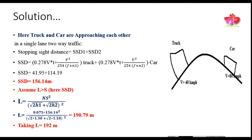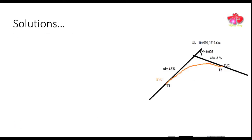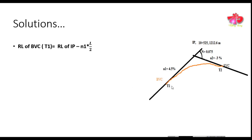We need to find the RL (reduced level/elevation) of T1 (BVC) and T2 (EVC) as shown in the figure. The RL of BVC is given by: RL of BVC = RL of IP − N1 × (L/2). Substituting the known values, the elevation of the beginning of vertical curve comes out to be 1208.28 meters.